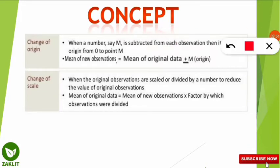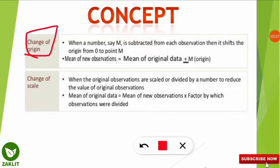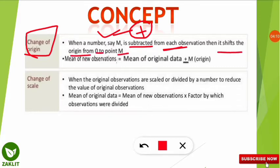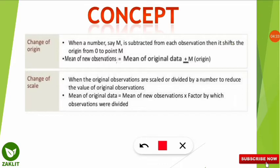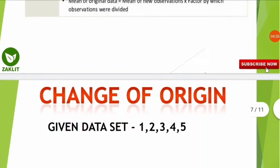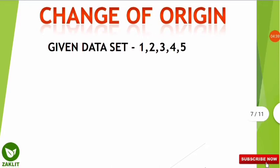Change of origin: when a number m is added to or subtracted from each observation, it shifts the origin from zero to the point m. The mean of the new observations equals the mean of the original data plus or minus the number m, depending on whether it was added or subtracted. Let's look at an example to clarify.